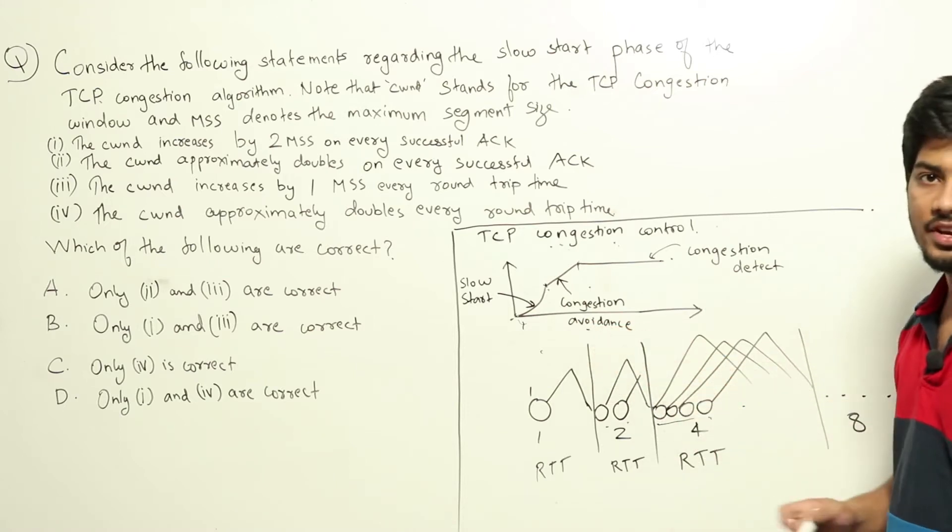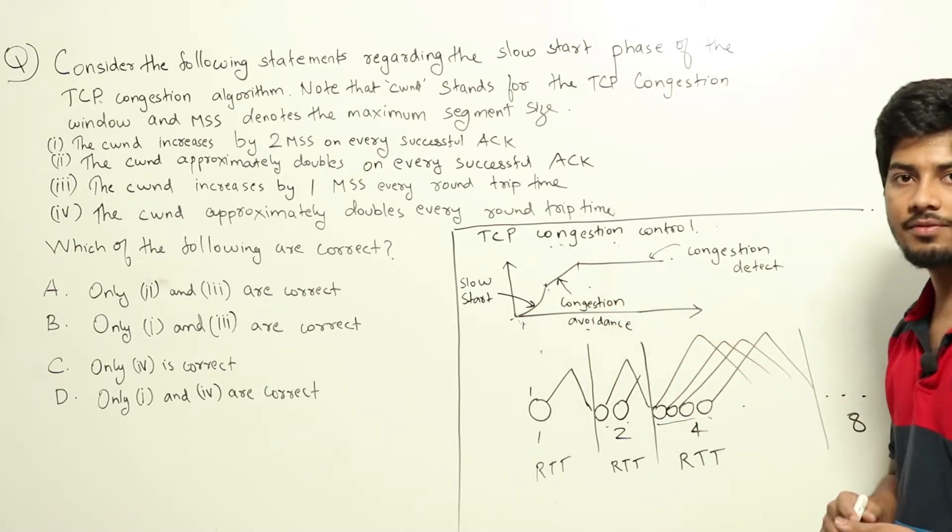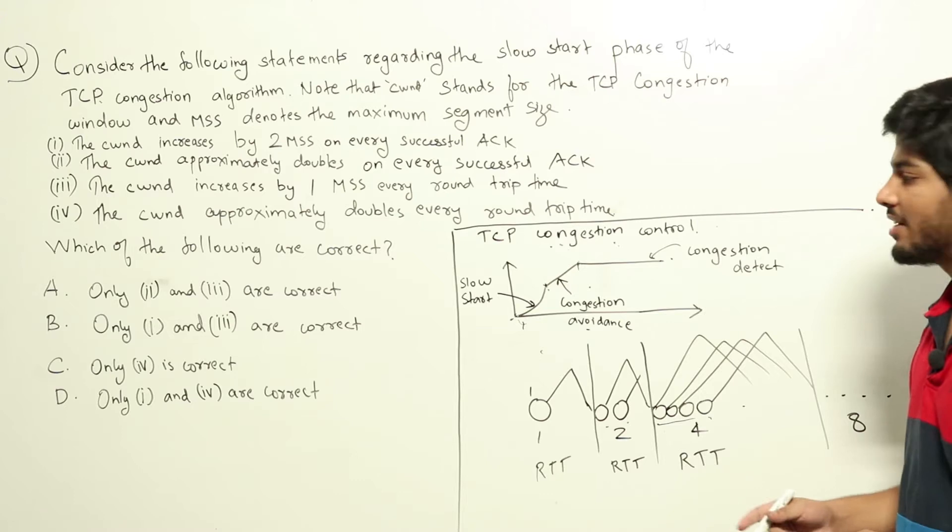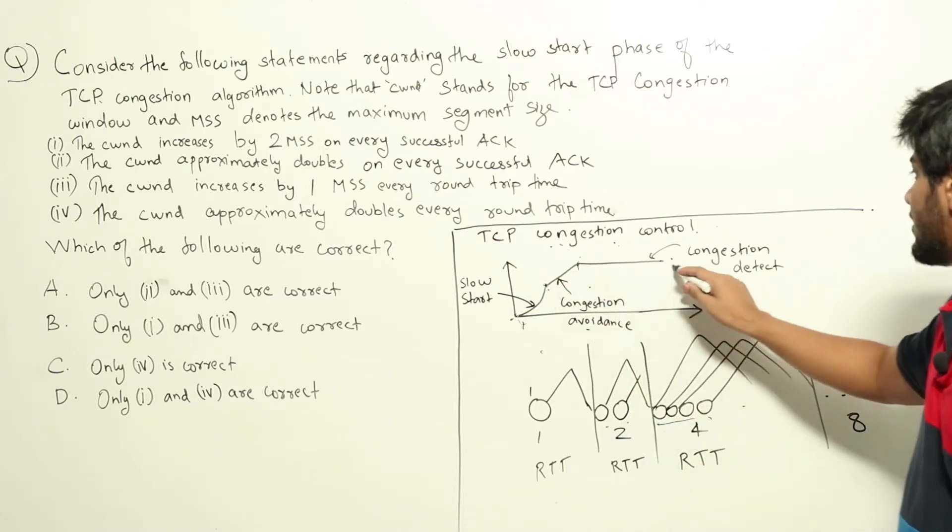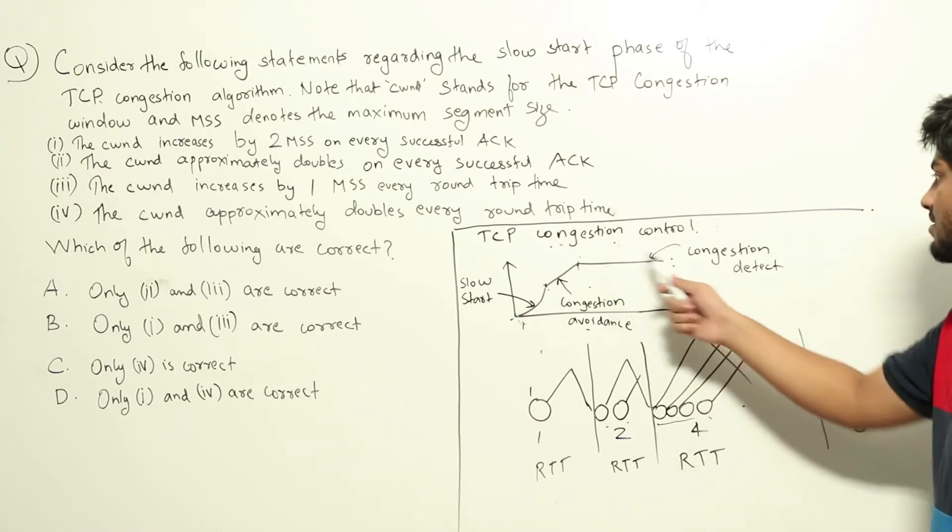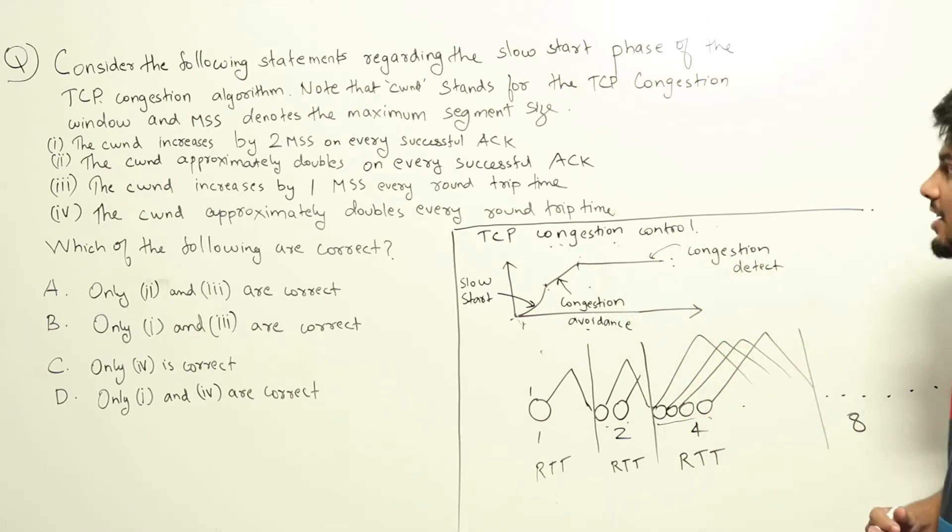After that we have the congestion avoidance phase. Here, after each round trip time we will be increasing the congestion window by one. And similarly, once it reaches the threshold we have the congestion detection phase which is stable. After each round trip time the congestion window doesn't change.